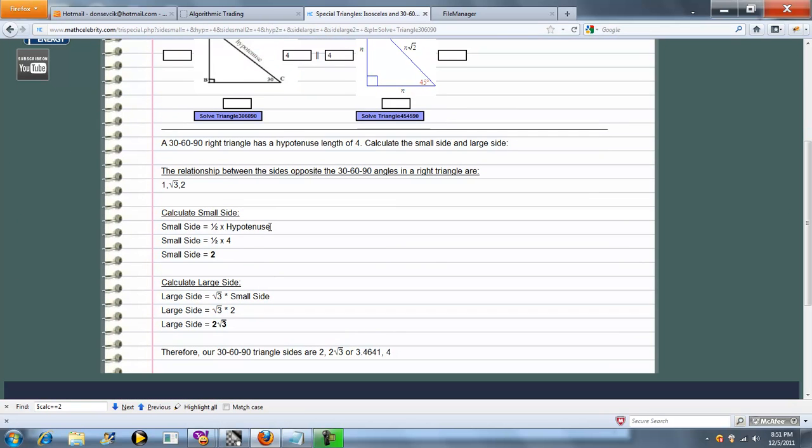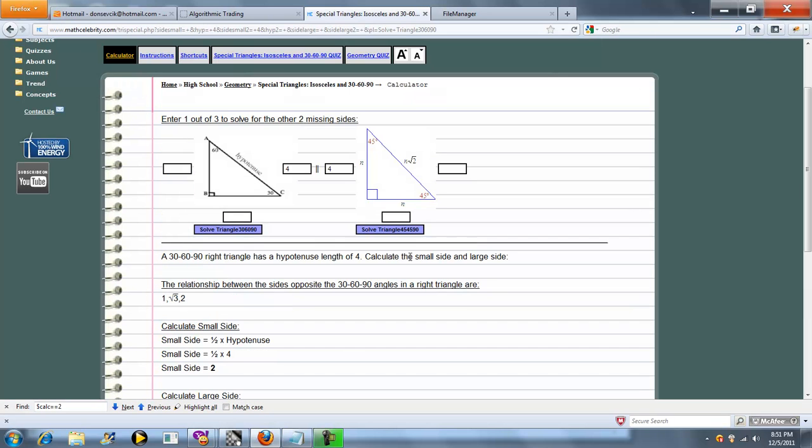Now, let's enter the hypotenuse instead. So this time, we need the small side, which was 2 in our original problem. That's great. And then our large side, 2 radical 3. And that's basically it.